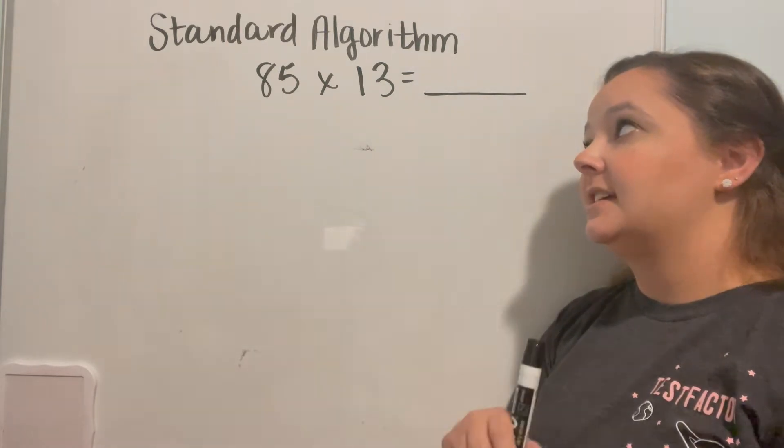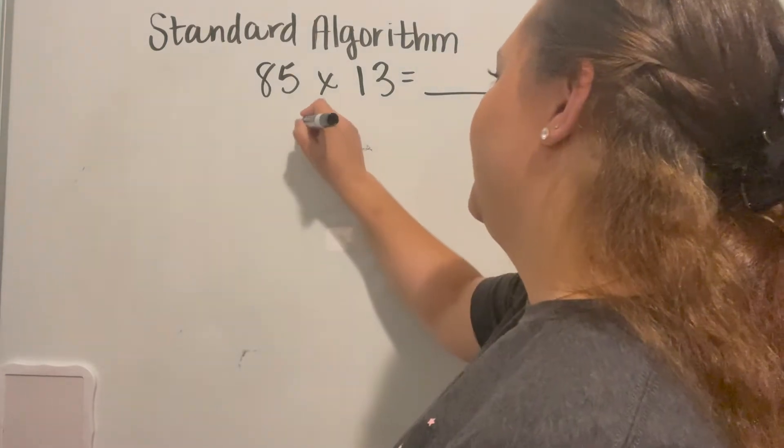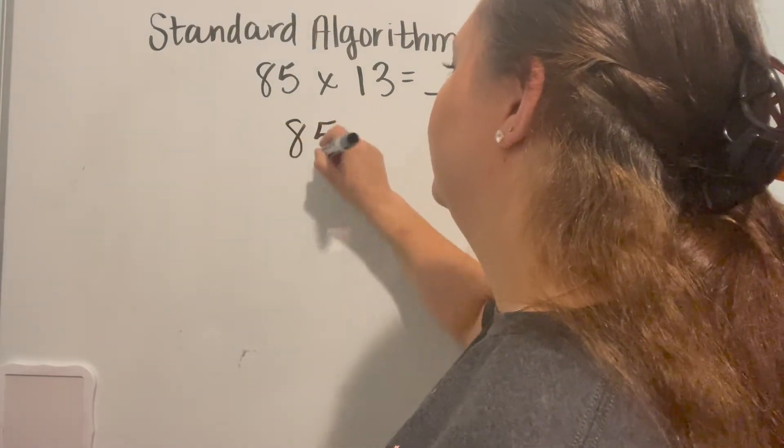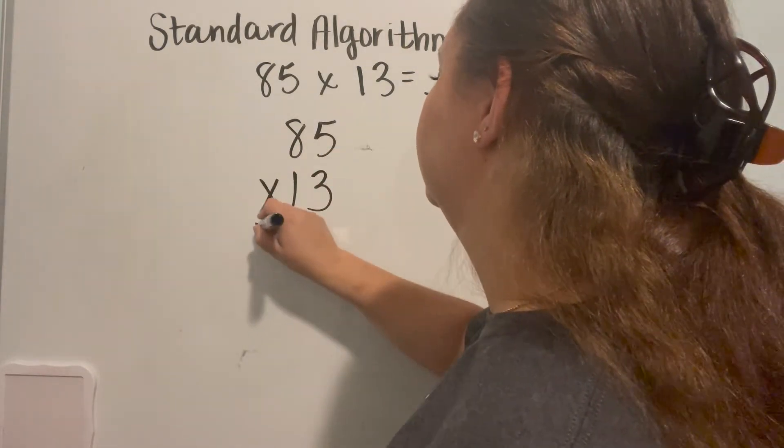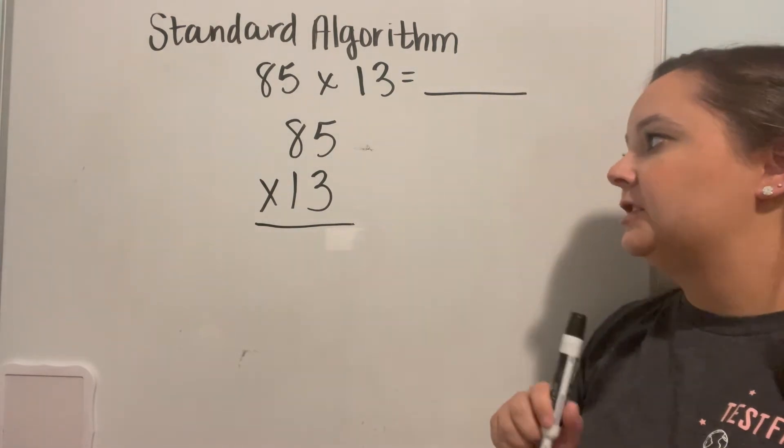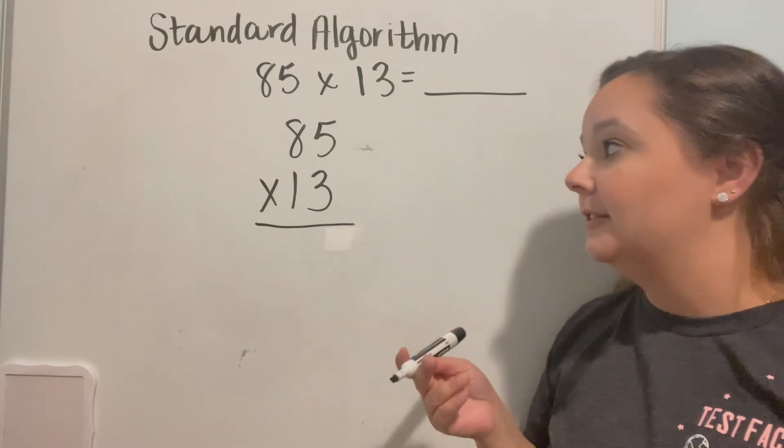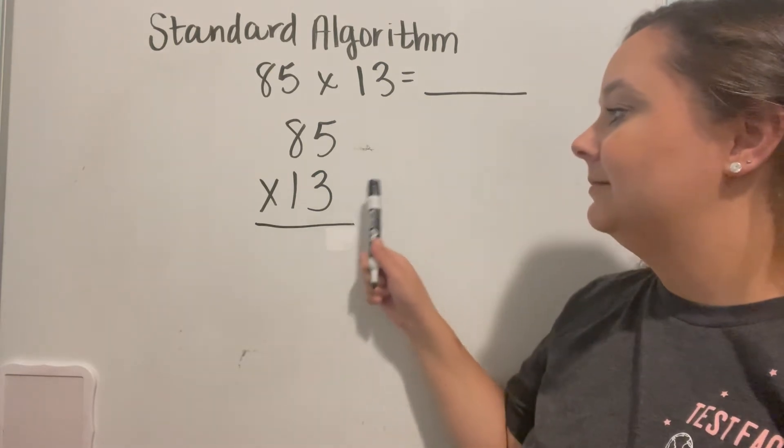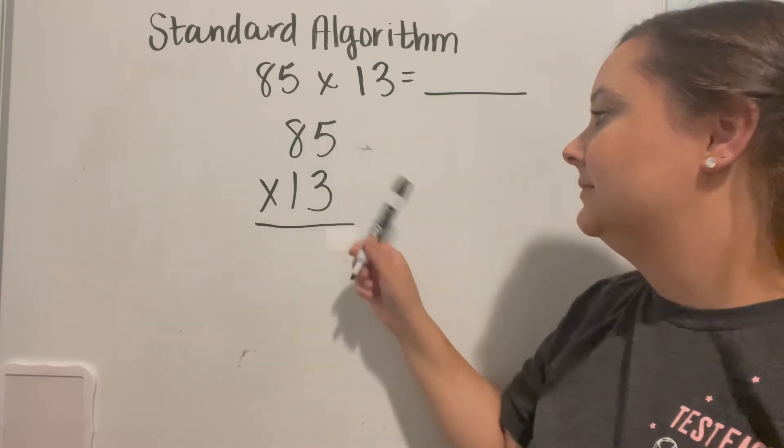But we're going to go ahead and set it up just like last time in standard algorithm format. So we have 85 times 13. Something that I like to remind students of when we're doing two digits by two digits is that there is a saying that we follow. We first start with our 3 and we multiply up.